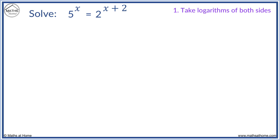First we take logs. We put each side of the equation inside a log. 5 to the x goes here and 2 to the x plus 2 goes here.